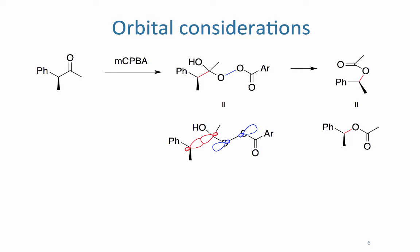Next thing we're going to look at are the orbital considerations for the reaction and their effect on the stereochemistry. In this case, we have mCPBA. This oxidant adds in to the base of the carbonyl, and this is the tetrahedral intermediate that's formed.